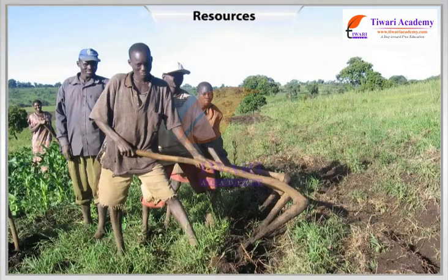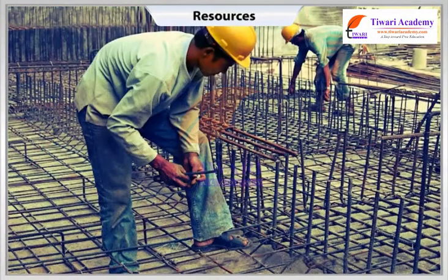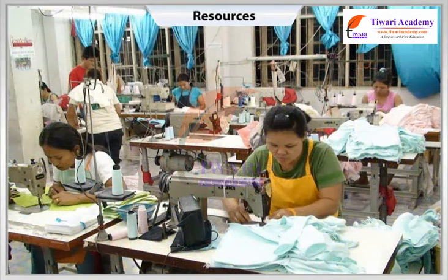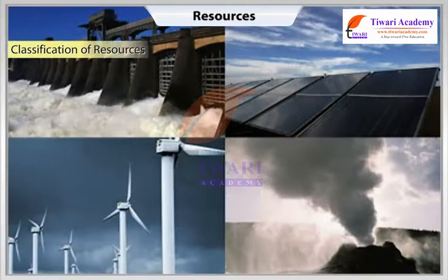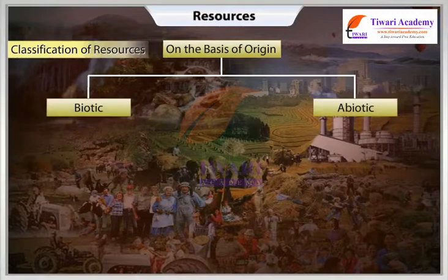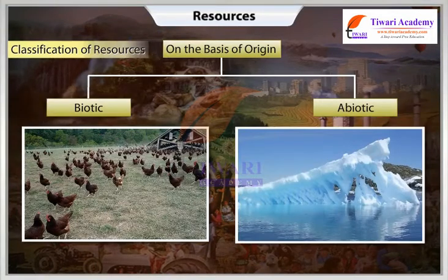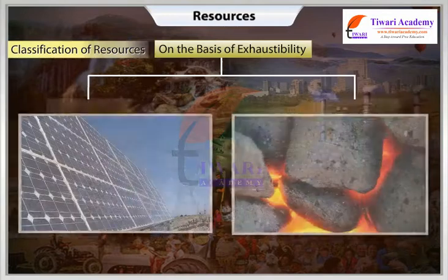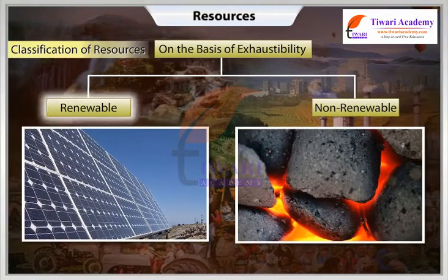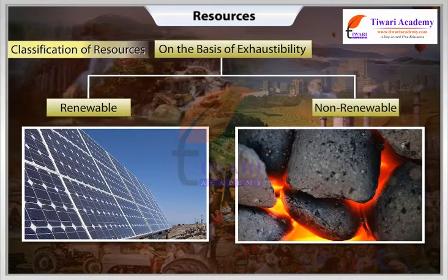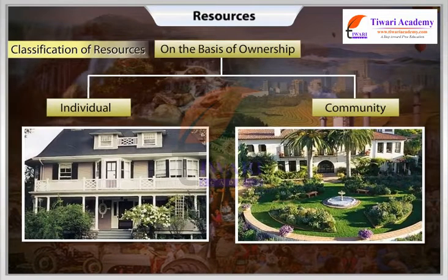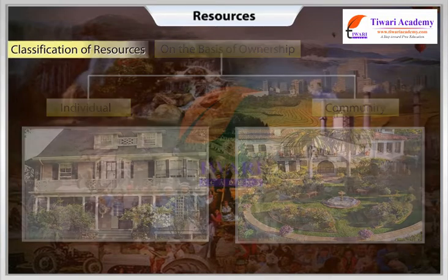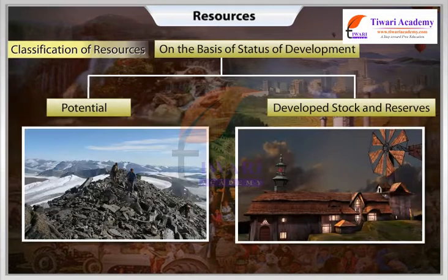They transform material available in our environment into resources and use them. Classification of resources: these resources can be classified in the following ways — on the basis of origin: biotic and abiotic; on the basis of exhaustibility: renewable and non-renewable; on the basis of ownership: individual, community, national, and international; on the basis of status of development: potential, developed, stock, and reserves.